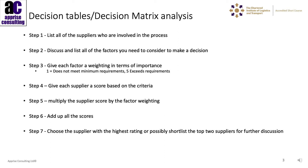So, how do we go about putting together a decision table? Well, in step one, we list all of the suppliers who are involved in the process, i.e. quoting for the service that you require. In step two, we discuss and list all of the factors that you need to consider to make the final decision. In step three, we give each factor a weighting in terms of its importance to the company.